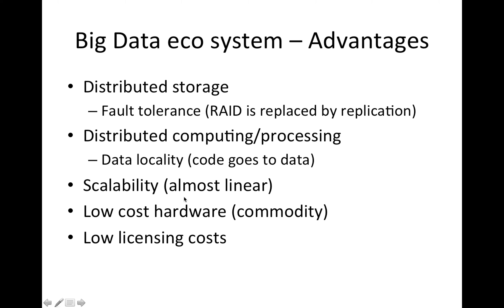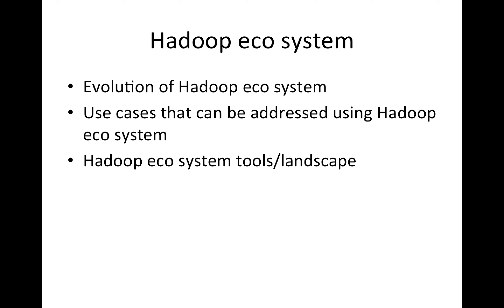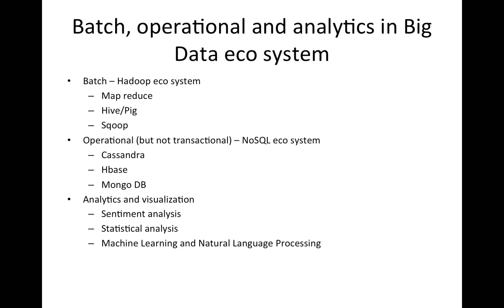Hello friends. So far we have spoken about conventional technologies and the evolution of IT in enterprises, and then we have spoken about the big data ecosystem and how big data came into picture with Google. Now we are getting into details of the big data ecosystem. As I have mentioned earlier, the big data ecosystem is categorized into three: one is batch, primarily the Hadoop ecosystem; the other one is operational, which is the NoSQL ecosystem; and then analytics and visualization.